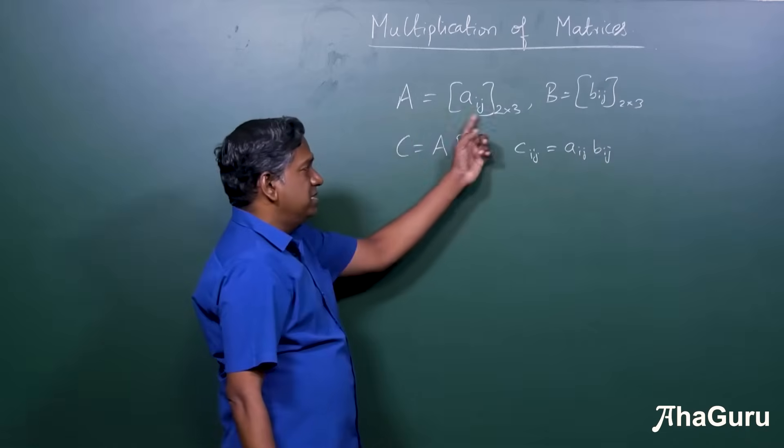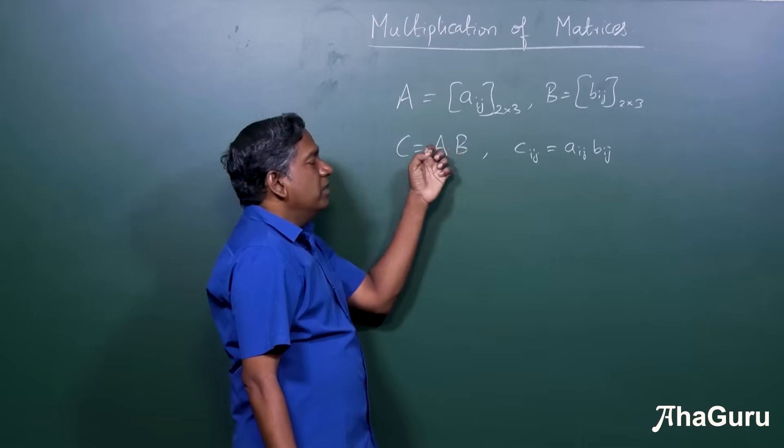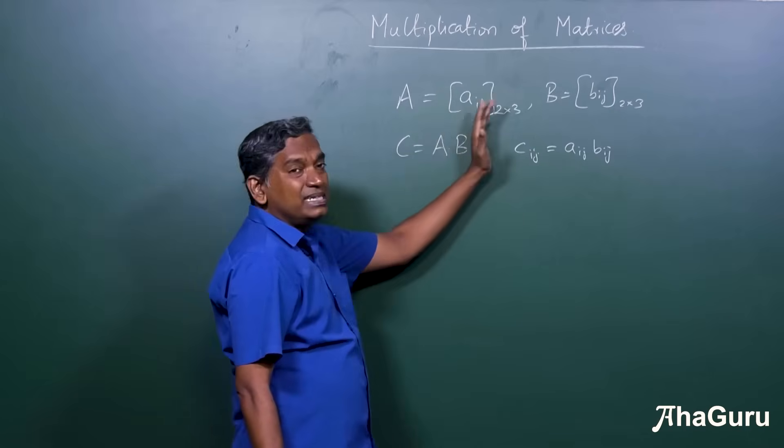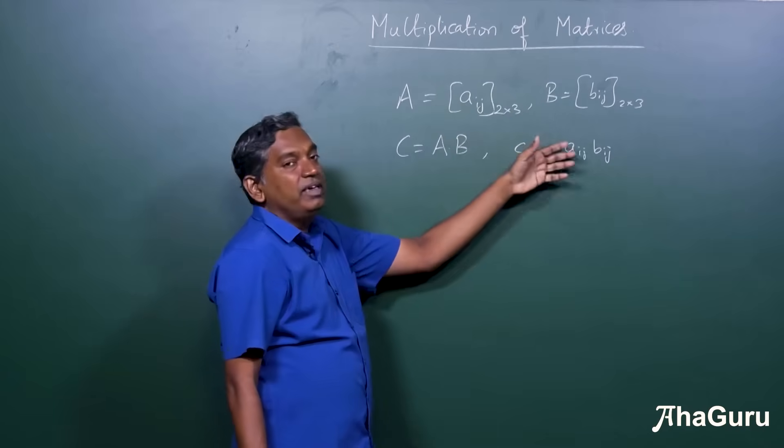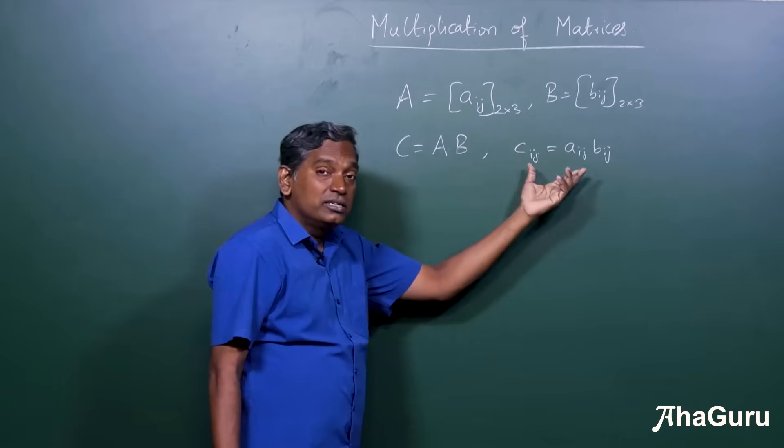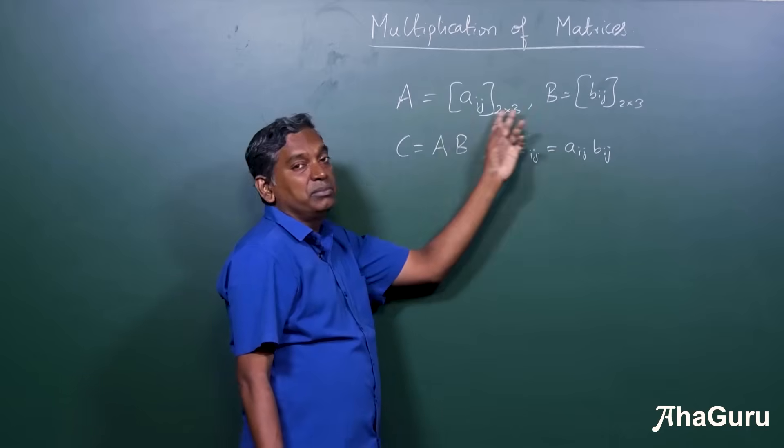This means we just multiply term by term. But what you will find is that matrix multiplication is not defined in an easy way like this. The question is why or why not? Why can't we define matrix multiplication like this?